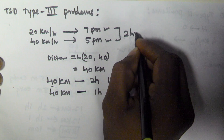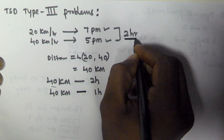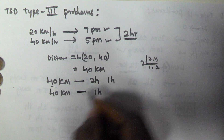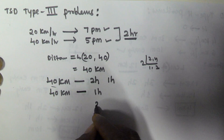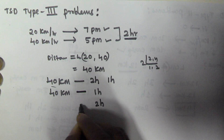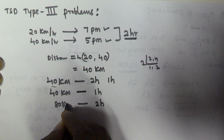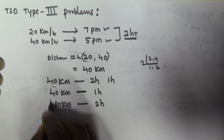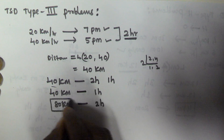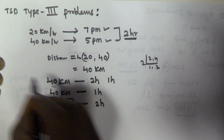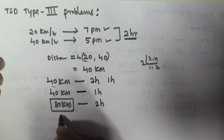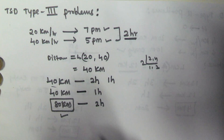So 1 hour corresponds to 40 km. Then 2 hours is 80 km. This is the actual distance between his home and office, that is 80 km.